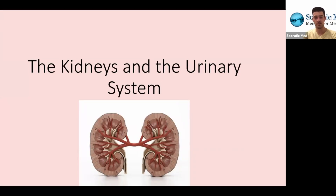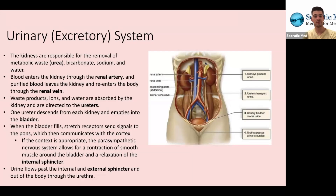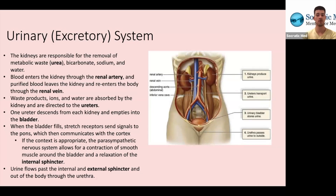Our first section is the kidneys and the urinary system, also known as the excretory system. The kidneys, as you can see in the diagram to the right, are two oblong organs on either side of the body. They're responsible for the removal of metabolic waste in humans, which comes in the form of urea — the nitrogenous waste. They can also remove bicarbonate, sodium, and water, among a couple of other smaller molecules.